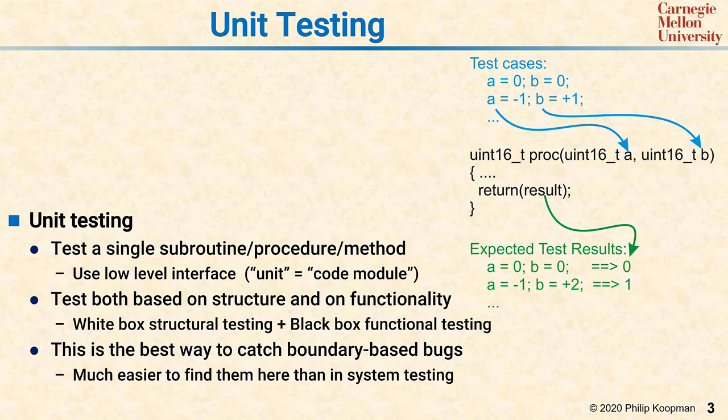There are three anti-patterns for unit testing. One anti-pattern is not doing it. Some systems are only tested at the system level, and that's a lost opportunity to find many detailed bugs that will not be found in most system testing, but could have been found in unit testing.